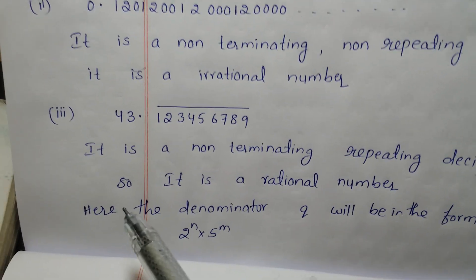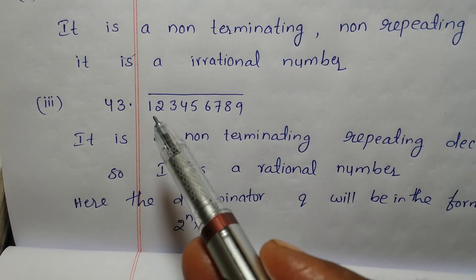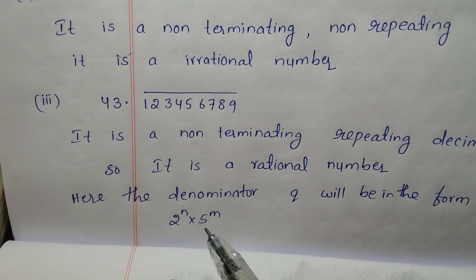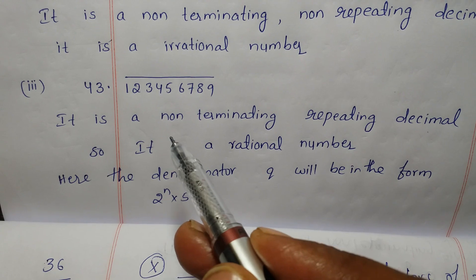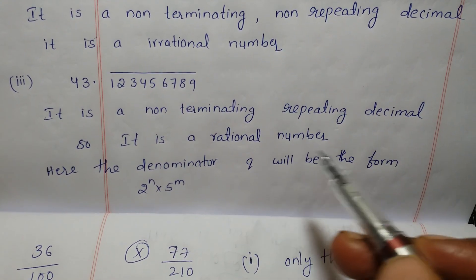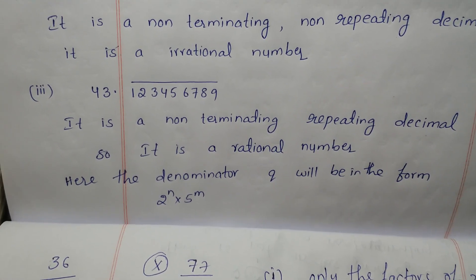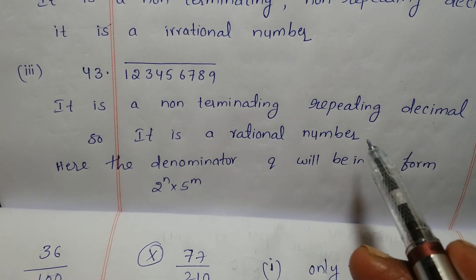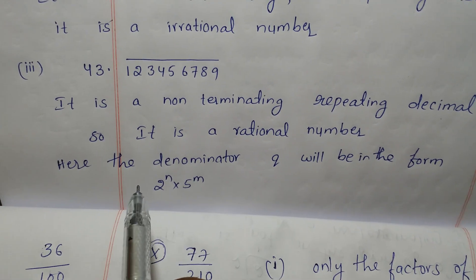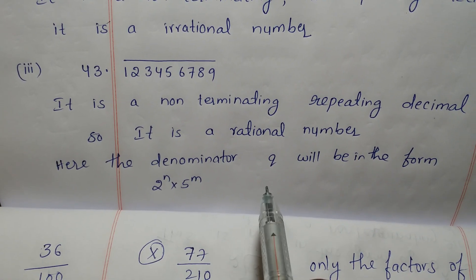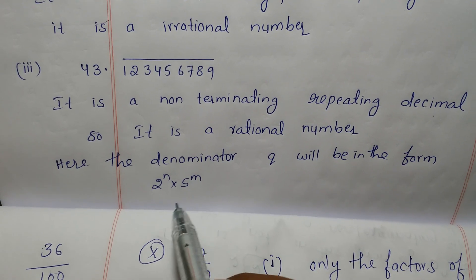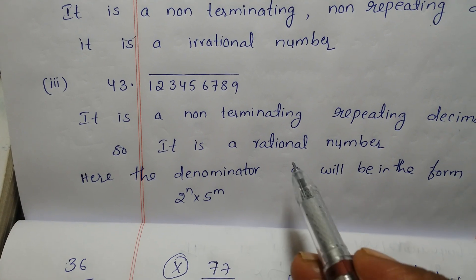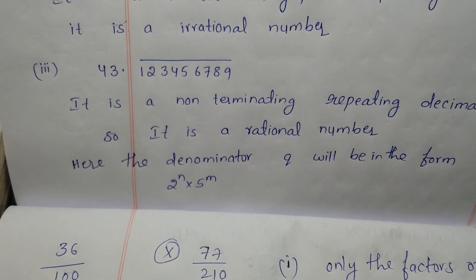Question number 3: 43.123456789 with a bar. The bar means it is a repeating decimal, so it is a non-terminating repeating decimal. We know that all non-terminating repeating decimals are rational numbers. So the given number is a rational number, and the denominator q will be in the form of 2 to the power of n into 5 to the power of m, meaning the prime factors of q are 2 and 5.